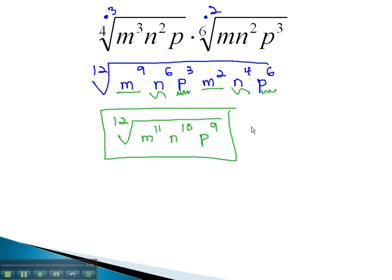We're left with the 12th root of m to the 11th, n to the 10th, p to the 9th. In part 2 of this video, we'll look at a second example that not only includes coefficients that we need to factor, but also the final answer would be reducible from here.